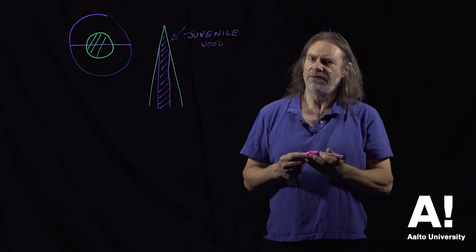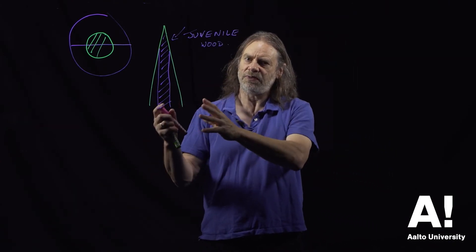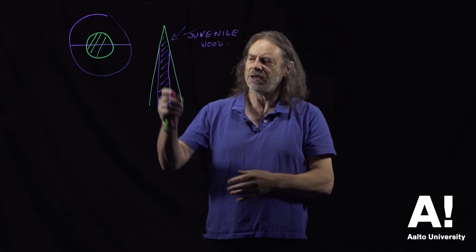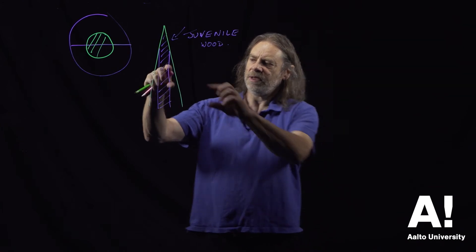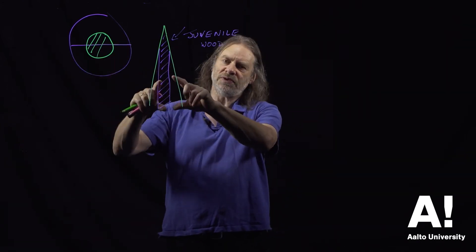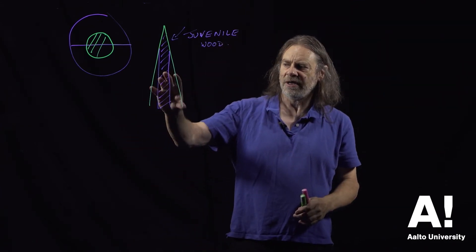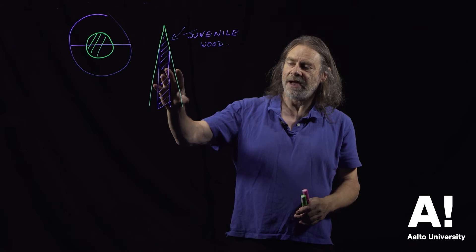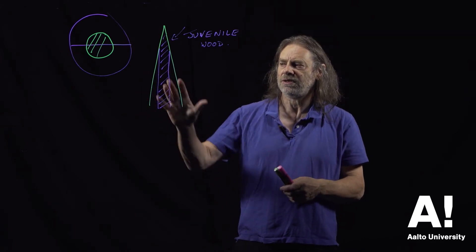And juvenile wood behaves differently from mature wood. When you dry it, it will distort in a different way. It will change dimensions in a different way. So if we have a mixture of juvenile and mature wood, maybe we've taken a plank from this part of the tree. So we've not just got heartwood, we've also got juvenile wood and mature wood. When we dry a plank of that type, that may distort because of the presence of juvenile wood. It can give all sorts of issues.